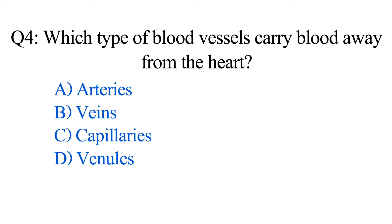Question number four. Which type of blood vessels carry blood away from the heart? Option A: Arteries. B: Veins. C: Capillaries. D: Venules. The correct option is Option A: Arteries.